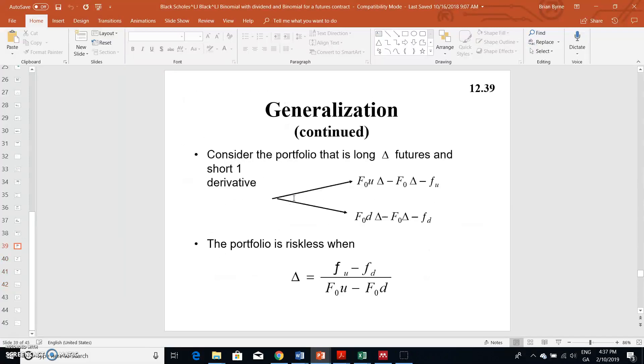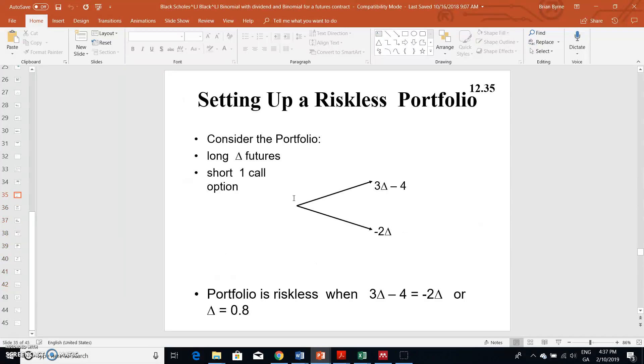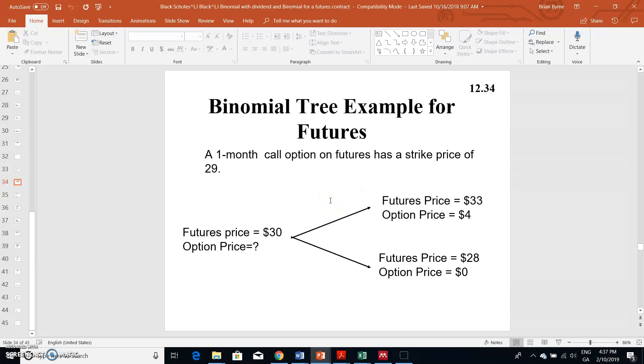We can take this initial example as a no-arbitrage type example where we limit the value of the futures price today to be $30, and we limit the future movement up to $33 or the futures price down to $28.